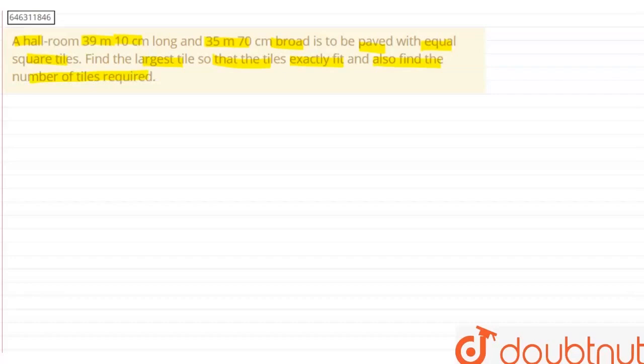So here the length, or we can say the length L is given 39 meter and 10 centimeter, which means we can write 39 meter plus 10 centimeter. We convert it into meter so we divide by 100, so this becomes 39.1 meter.